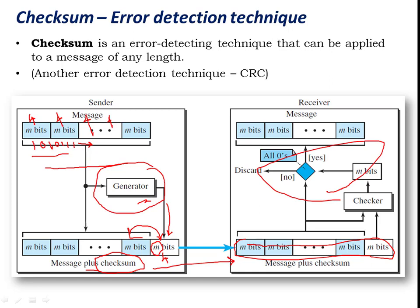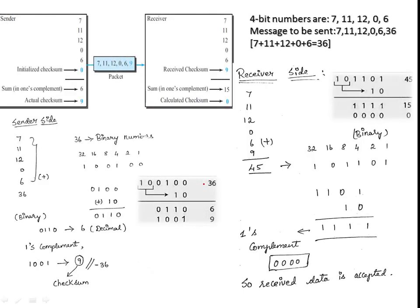At the receiver side, all received data are added together. Since we are using 4-bit partitions, the result should also be 4 bits. If the result is all zeros, we conclude the information was received correctly. If instead of all zeros we get any ones, then the original information was received with an error and is discarded. The receiver will not send an acknowledgment to the sender, so the sender will retransmit the previously sent data.